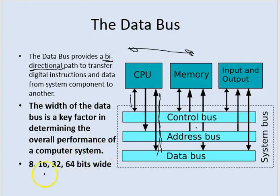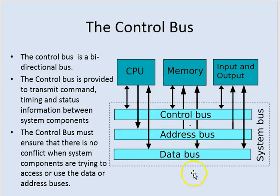The wider your data bus, the faster it can transmit data. It can be eight or 16 bits wide, 32 bits, 64 bits — and the wider it is, the quicker information will be transmitted on that bus and then processed. So the width of the data bus is a key factor in the overall performance of the computer system.